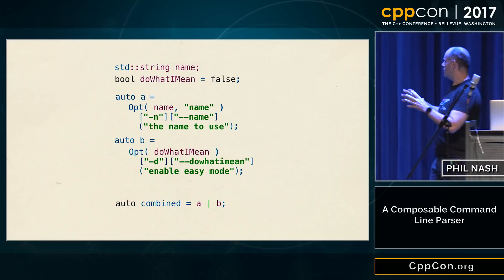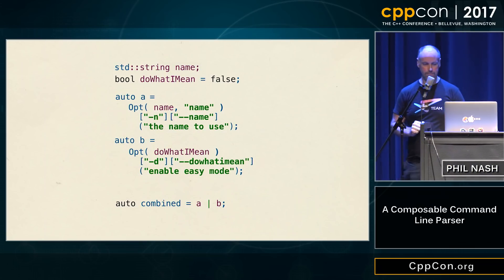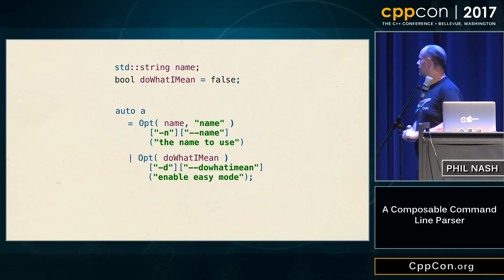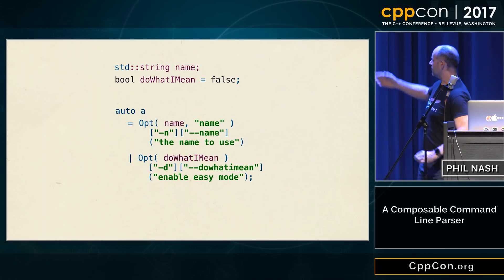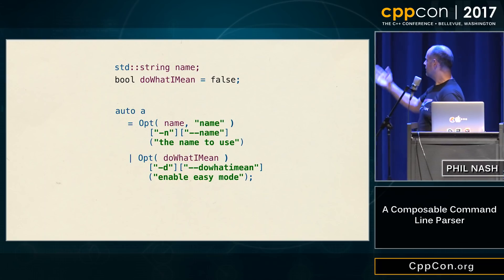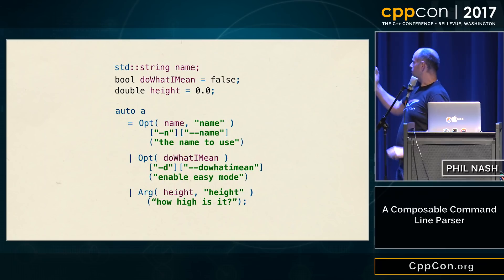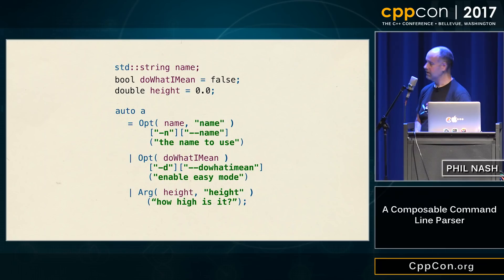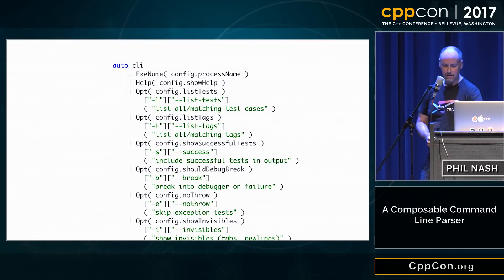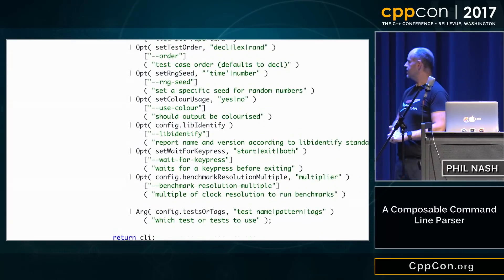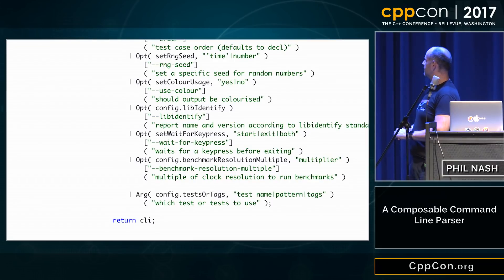So it's a bit of a monadic bind there. You're now left with a combined parser. And of course, we can do away with the intermediate variables, just have a nice declarative setup of your parsers, and we can easily add more. This is an argument rather than an option, but it's basically the same sort of thing. In fact, this is exactly what Catch now does — this is the complete command line specification for Catch. It's all very regular and neat and easy to follow.